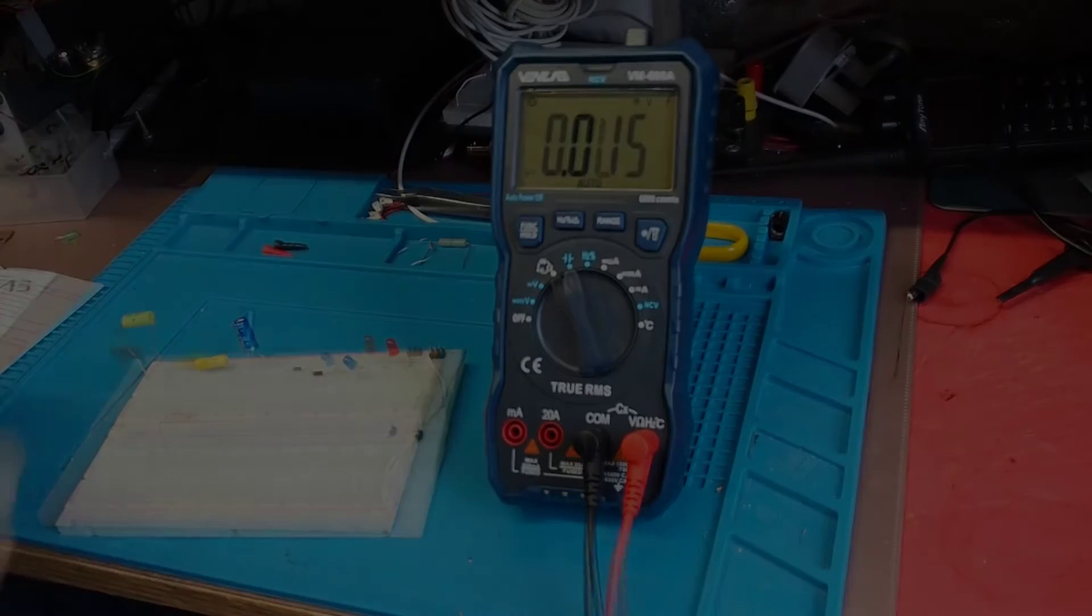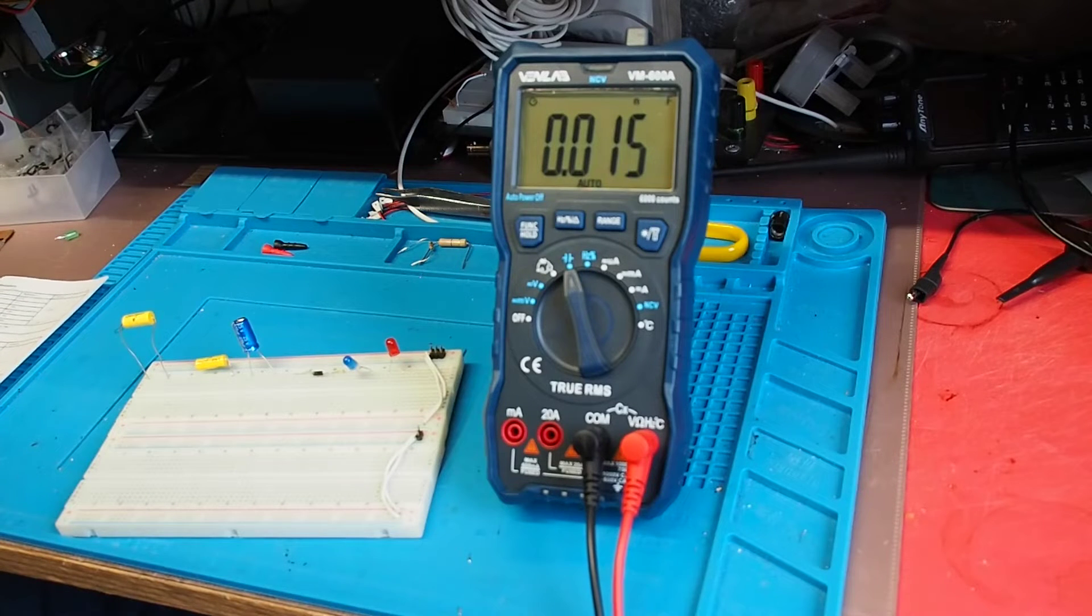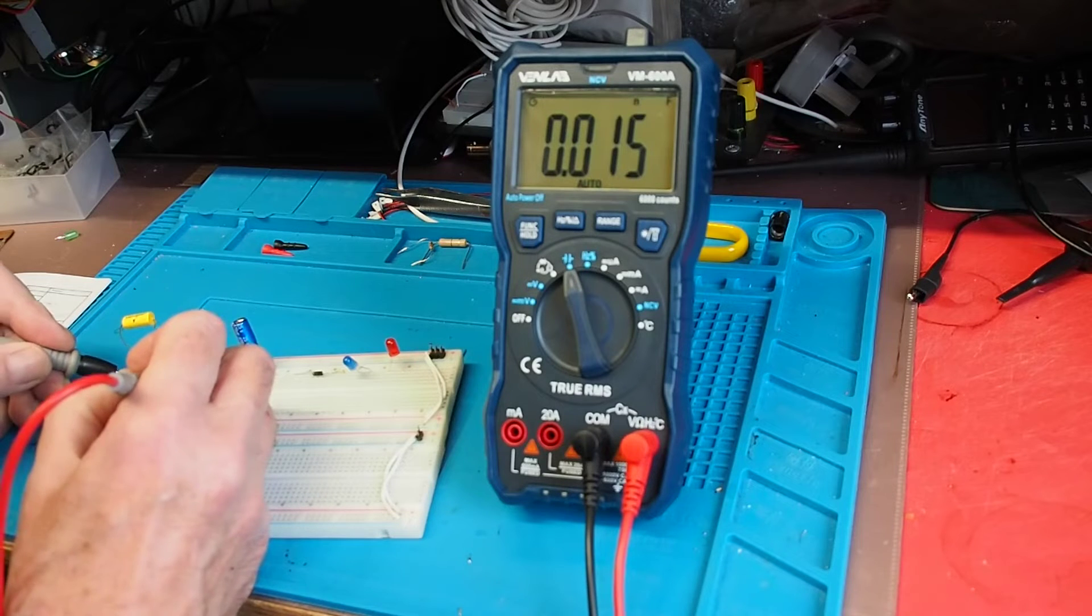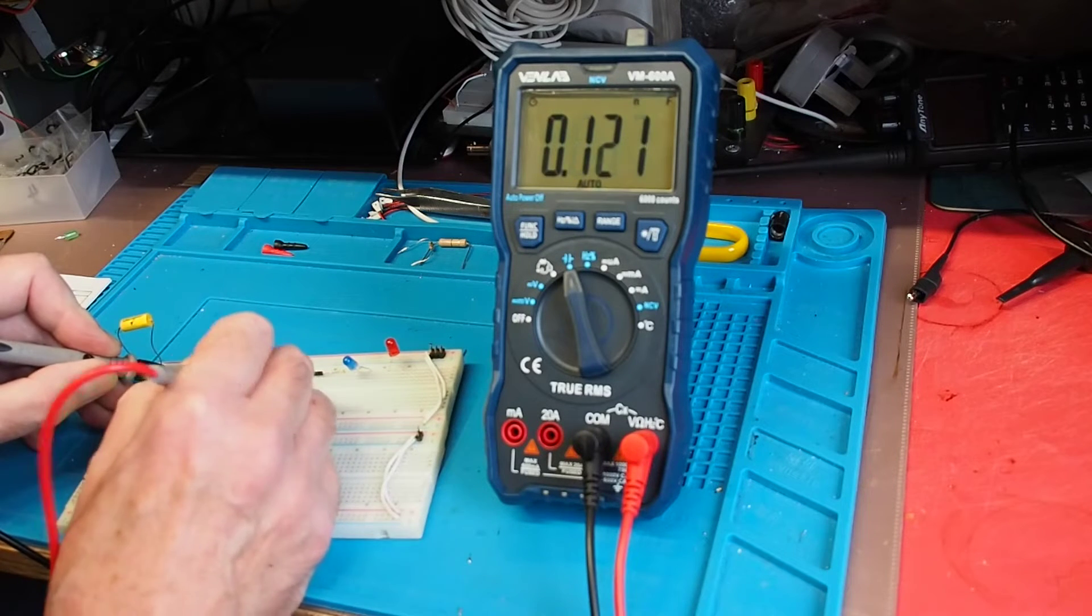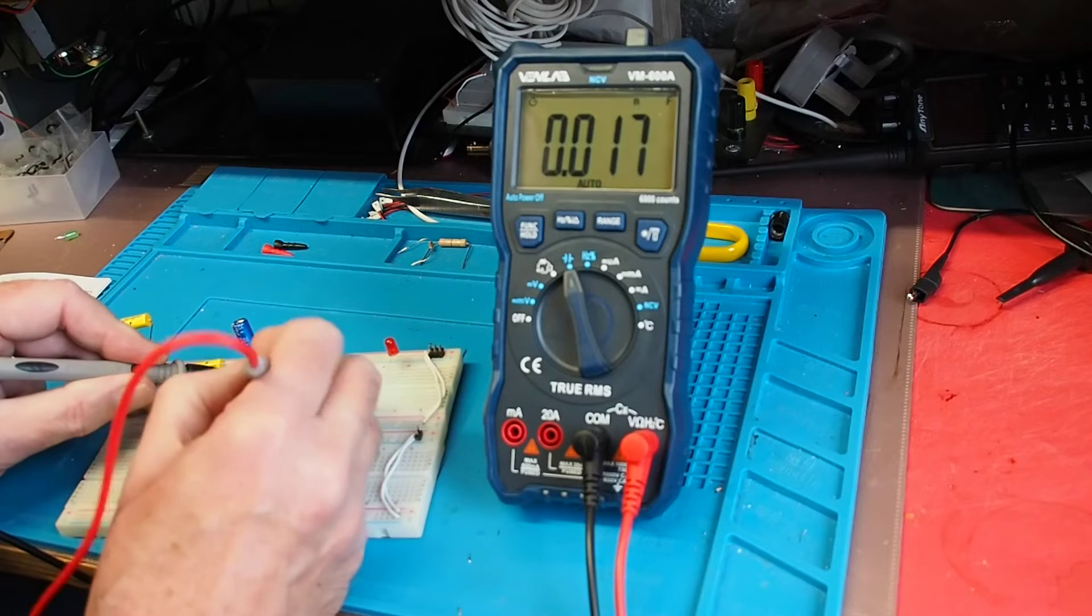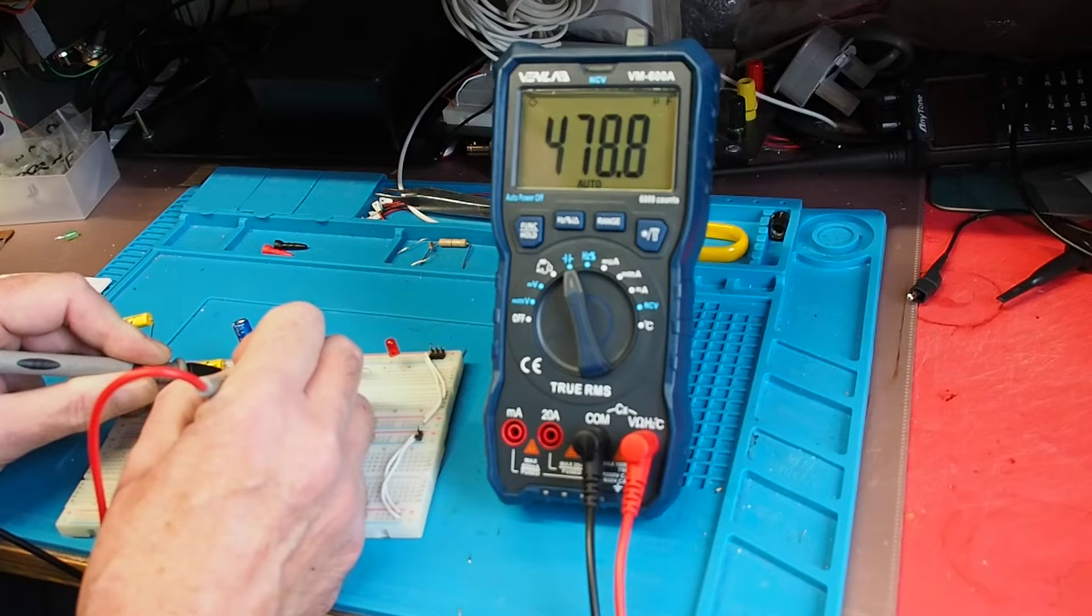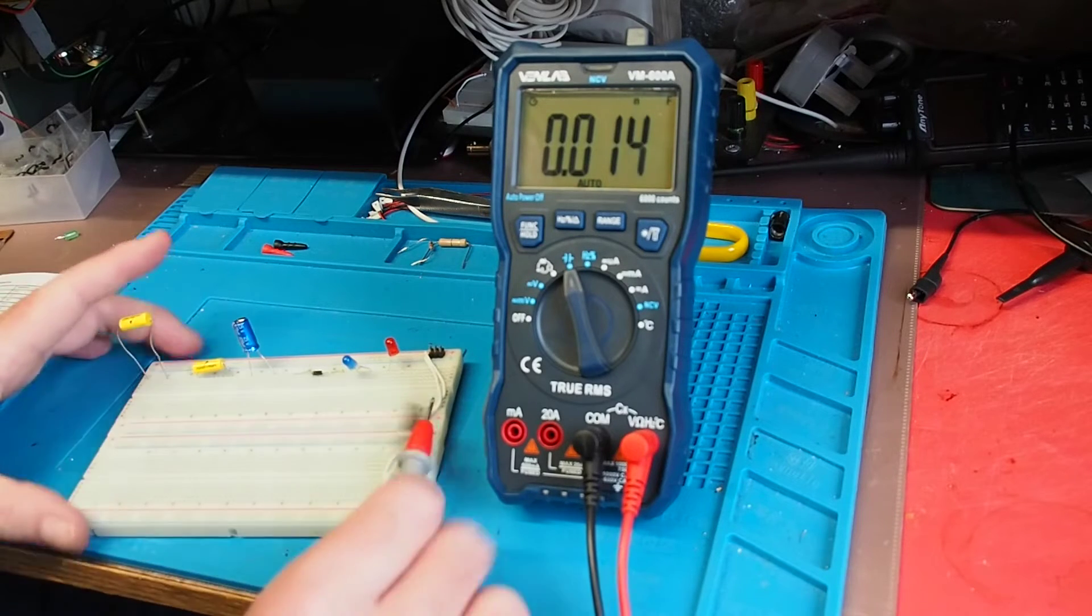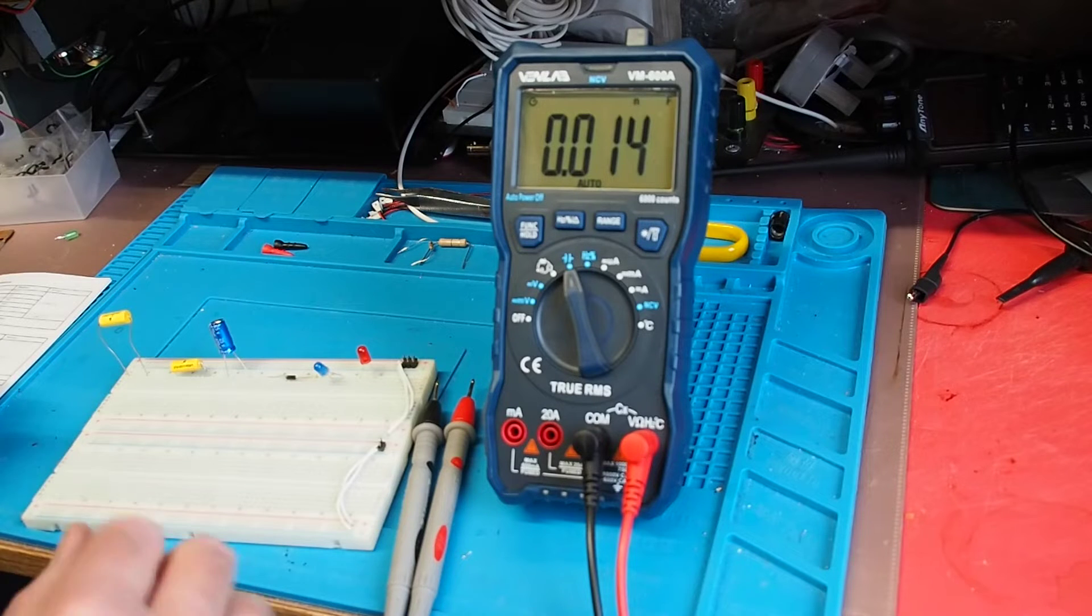According to the manual, it should be able to measure from 6 nanofarads up to 100 millifarads. I've got a 1 nanofarad here, it's reading 1.047, that's pretty good. We've got a 2.2 nanofarad, it's coming out nicely for that. We've got a 470 microfarad electrolytic here, it's reading 478. I think that's pretty close, so for the hobbyist reading values of capacitors, that's pretty good.